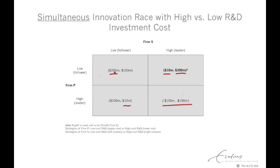Now we're going to see how we can solve this simultaneous move game. As noted, we can apply Rule 1 and try to find dominant strategies. Consider the low effort strategy of firm P — that's the upper row. The payoff for firm P under the low effort strategy dominates the payoff of a high effort strategy: 200 is larger than 100, and 10 million is larger than minus 100 million.